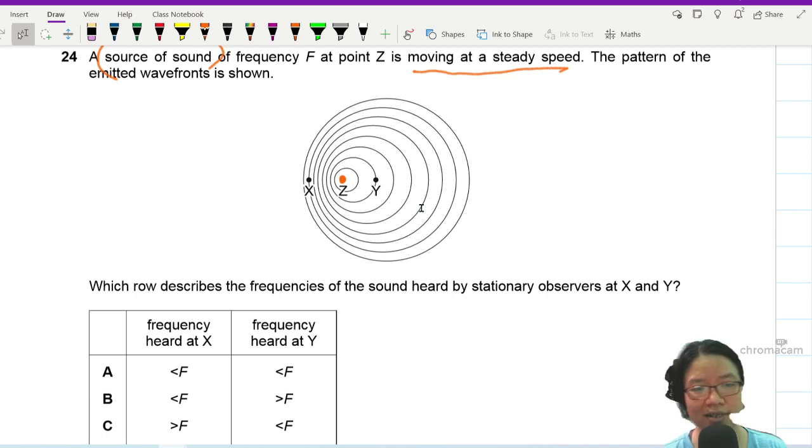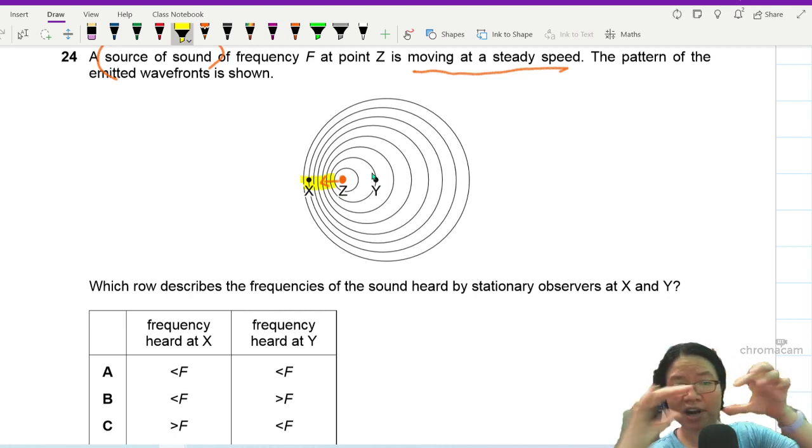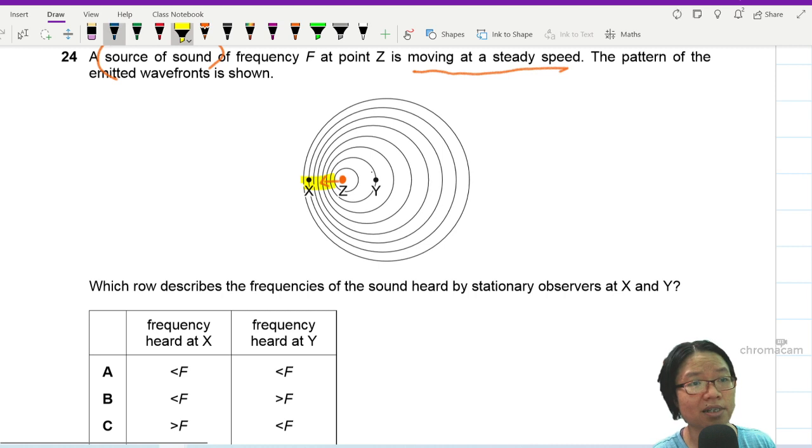It's pretty obvious that z is moving towards x because z is compressing the wave towards x. So z is moving in this direction. But even if I don't know that, what I can do is stare at this part and see that the separation between the wave profiles is smaller, between the circles is smaller.